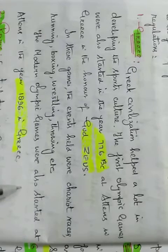The modern Olympic Games were also started at Athens in the year 1896 in Greece. The contribution of Greece towards games is a lot and commendable and admirable.